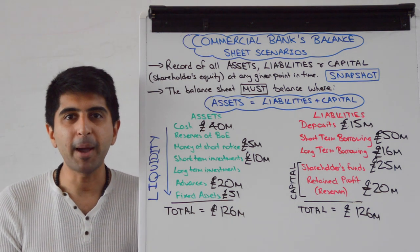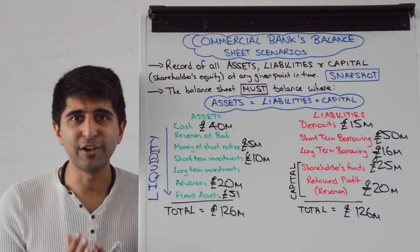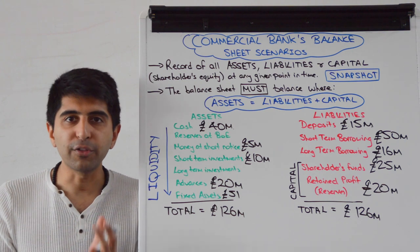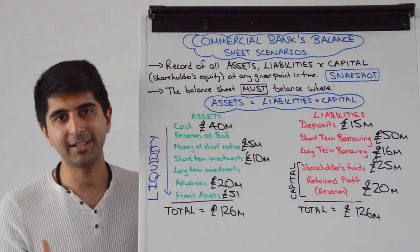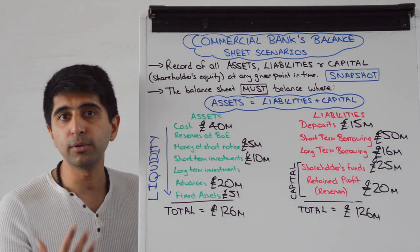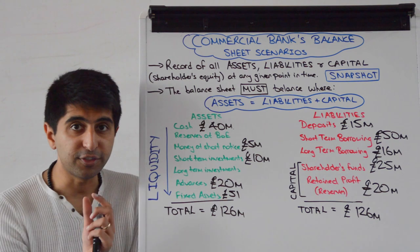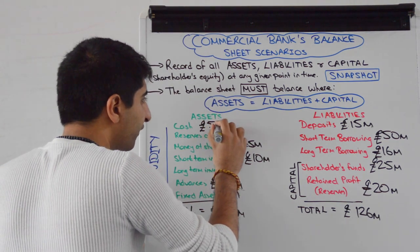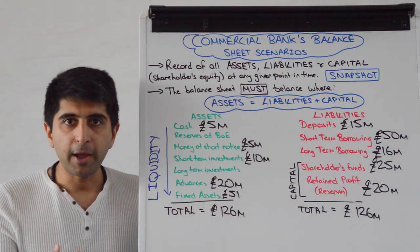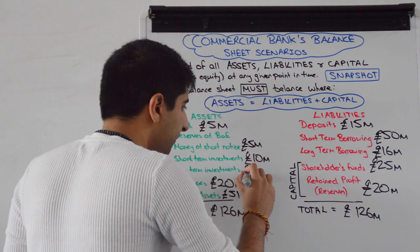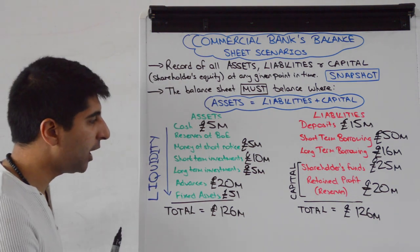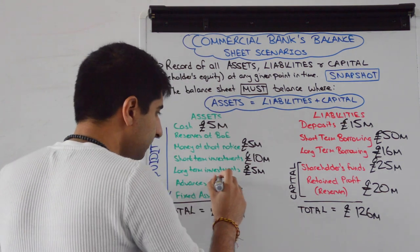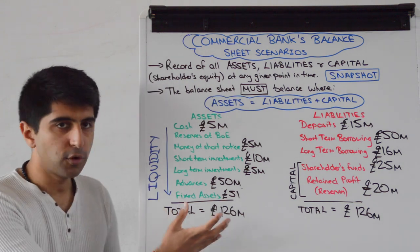The bank wants to buy up 5 million pounds worth of RBS shares as an investment strategy, and also lend out 30 million pounds to an entrepreneur developing driverless car technology — no collateral, no security, just a simple 30 million pound loan. That's 35 million pounds in total taken off cash, reducing it from 40 million to 5 million pounds. The 5 million pounds in RBS shares becomes long-term investments, and the 30 million pound loan increases advances from 20 million to 50 million pounds. No change in total assets — still 126 million — and we have a balanced balance sheet.